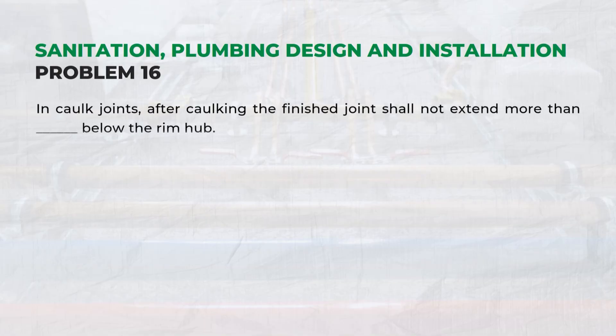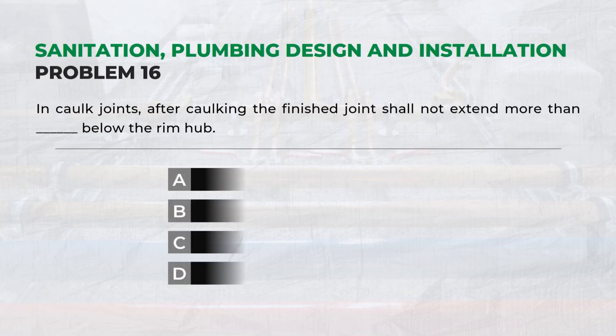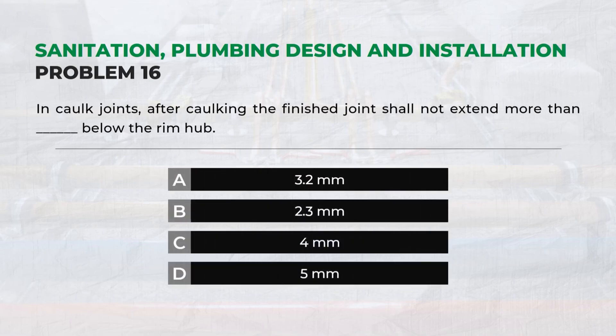In caulk joints, after caulking, the finished joint shall not extend more than below the rim hub — Answer A: 3.2 mm.